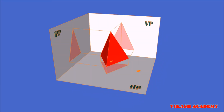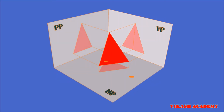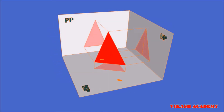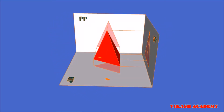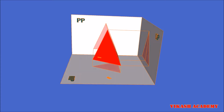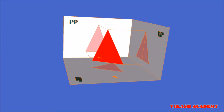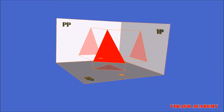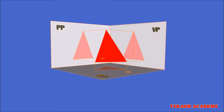will be obtained on the left profile plane. In this particular case we are going to observe this object from the right side, and that's why we are going to obtain our right hand side view on the left profile plane.